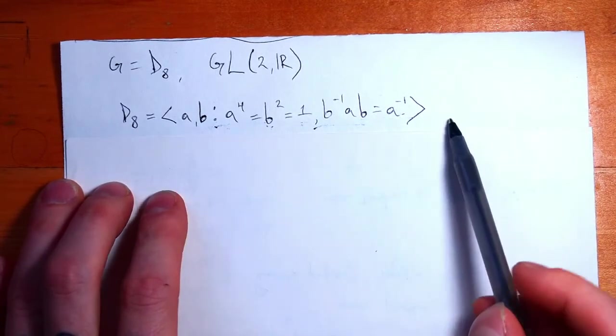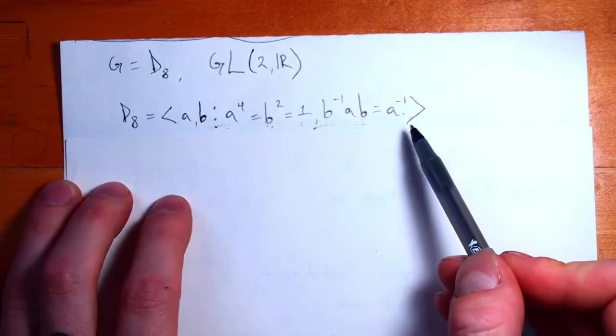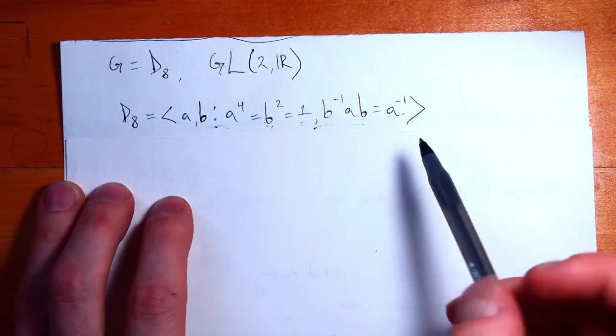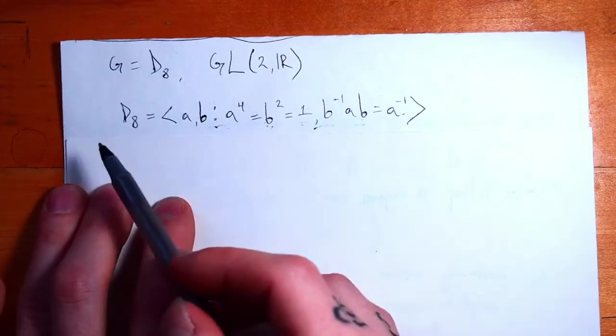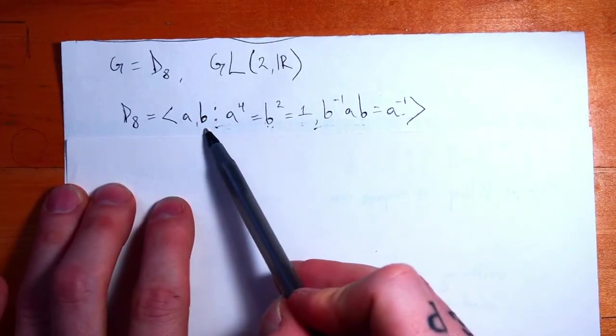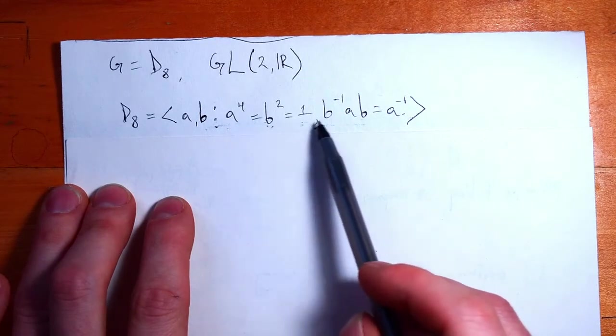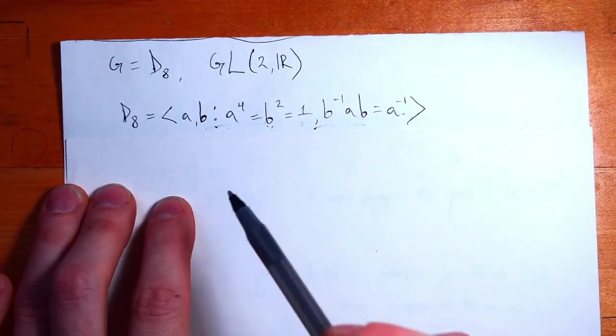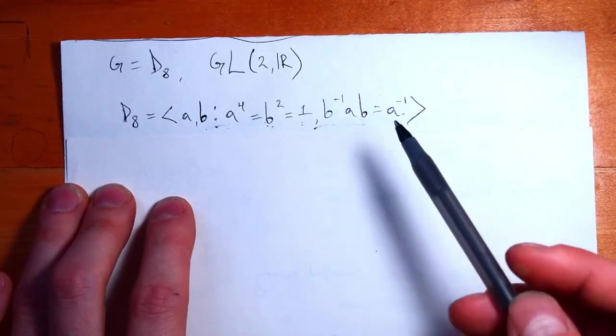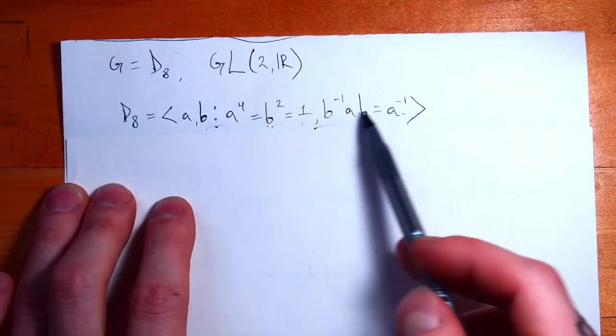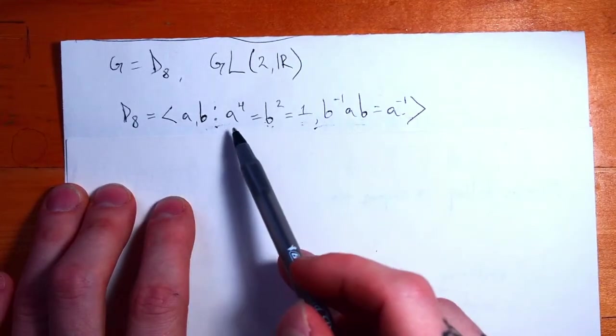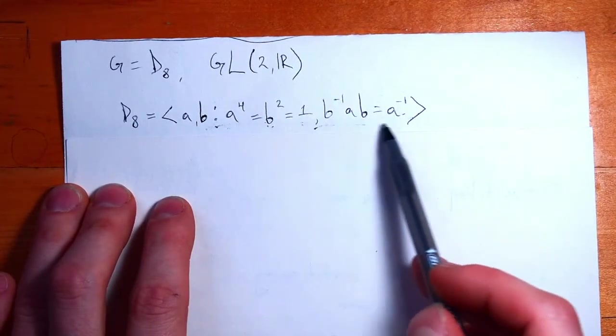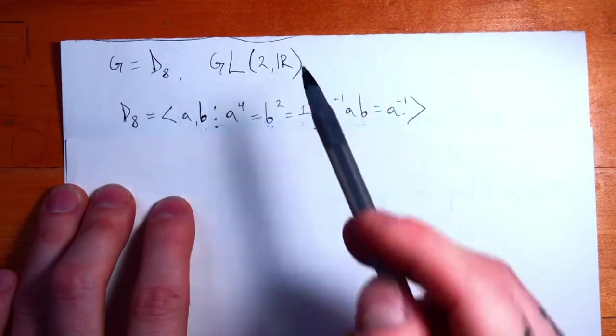D8 can be written in this form. This is called a presentation of a group, if you've never seen that before. And it uniquely specifies all the properties of D8. If you have two elements, A and B, that satisfy these relationships, then you have uniquely specified D8. If you have a collection of elements that similarly satisfy these 1, 2, 3 equations, you have D8.